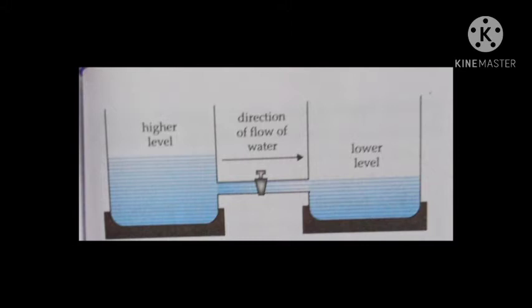This flow of water continues till the level of water in both vessels becomes equal. The direction of flow of water does not depend on the amount of water in the two vessels; instead, it depends on the height to which water is filled. Water flows from the vessel at a higher level to the vessel at a lower level.